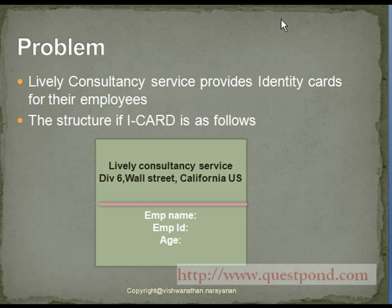The structure of the iCard is as follows. It consists of the name of the company, which is Lively Consultancy Service, and its address. The address depends upon the division in which the employee works. Along with this, it also has the name of the employee, their employee ID and age.